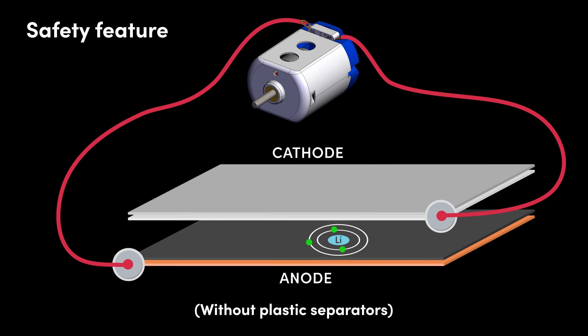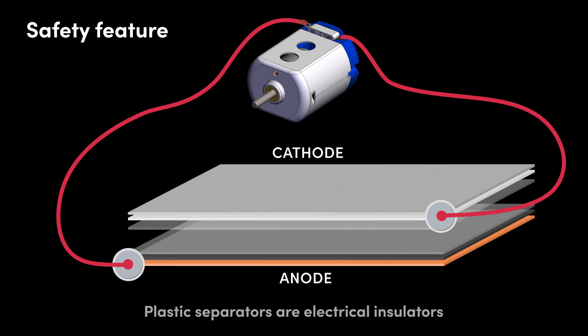If this were to happen, the rapid chemical reaction could easily cause the cell to combust. However, the separators, which are electrical insulators, prevent the migration of free electrons. Thus, such a dangerous chemical reaction cannot occur.